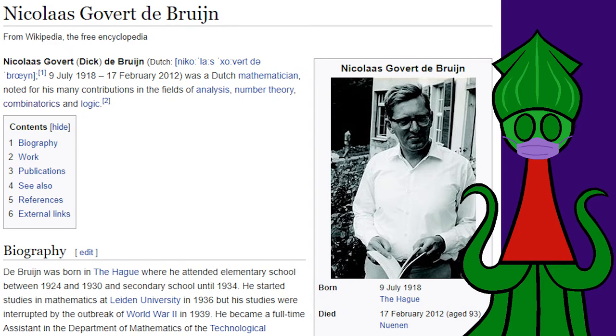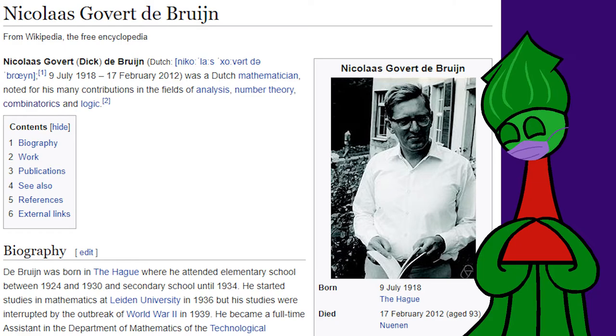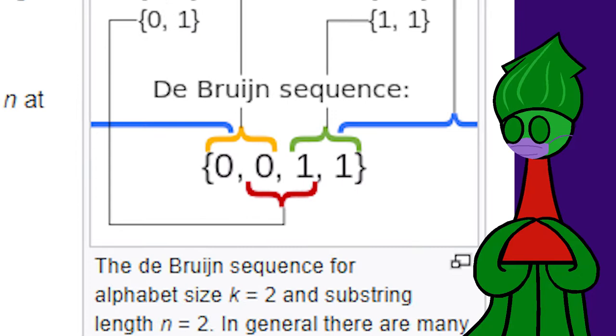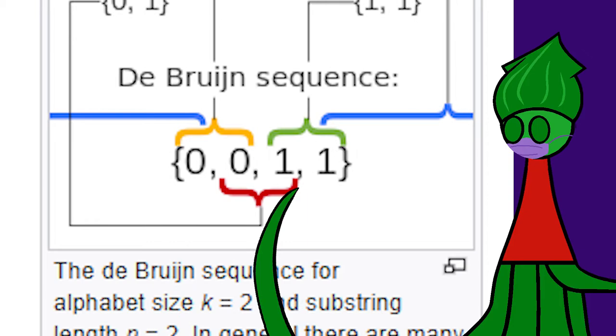Nicholas Govert Debron was born in 1918 and died 2012. As a math professor, he came up with these super neato sequences: Debron sequences. Sequences with parentheses around them like this repeat. When you leave one side, you come back in the other side. Think Pac-Man.